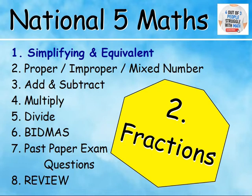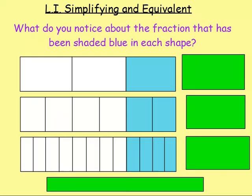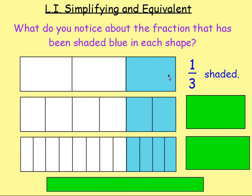We're starting this off with a recap from previous years, looking at simplifying fractions and equivalent fractions. So we're going to start off with these shapes, and if we take this one up here, what fraction of the shape has been shaded? One third! Perfect - one third has been shaded blue. You've got one bit blue and there are three parts in total.